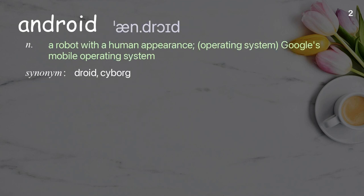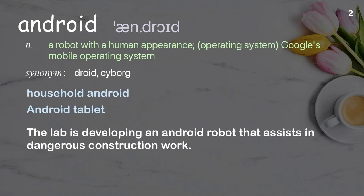Android: A robot with a human appearance; also an operating system — specifically, Google's mobile operating system. Examples: Household Android, Android tablet. The lab is developing an Android robot that assists in dangerous construction work.